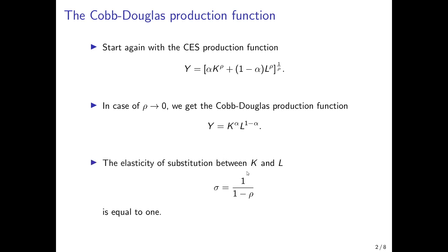The elasticity of substitution between capital and labor in the Cobb-Douglas case is one over one minus rho, and since rho is equal to zero, it is equal to one. So capital and labor can be substituted to a certain degree. We usually have the Cobb-Douglas production function separating two other cases: when capital and labor are gross substitutes — when the elasticity of substitution is greater than one — or gross complements.